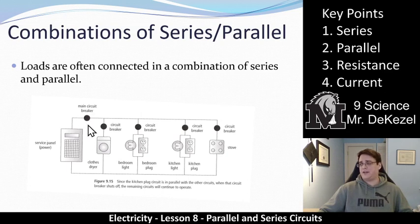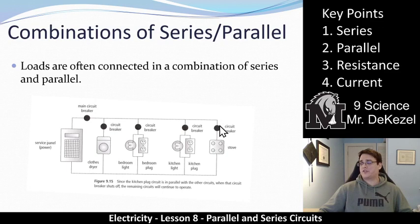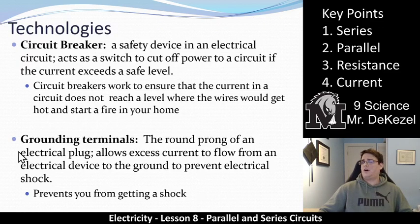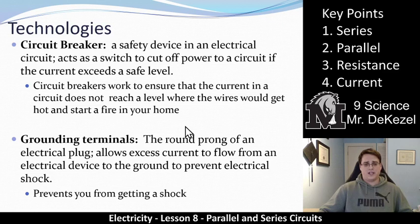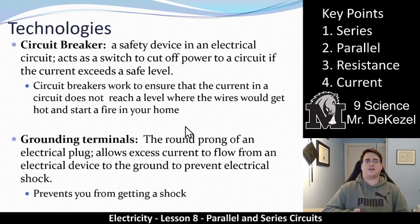We have a main safety valve, and then all of the individual circuit breakers are safety valves for what comes after them. If the stove circuit breaker goes off, everything else still works — you can just go flip that breaker and make sure you don't use too much power. We also have grounding terminals. The grounding terminal is the round prong of an electrical plug; it allows excess current to flow from an electrical device to the ground to prevent electrical shock, and it may also prevent a power surge to your computer. Grounding terminals are like an extra parallel circuit that allows extra current to flow down, and a circuit breaker is a switch that cuts off circuits when currents get too high.